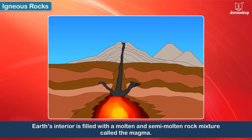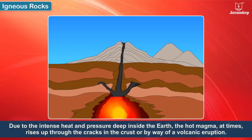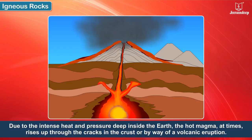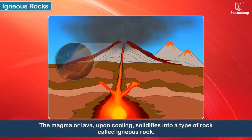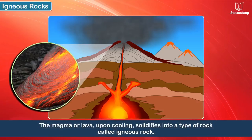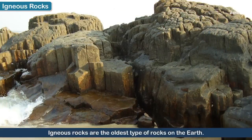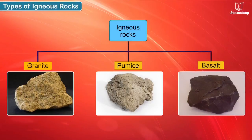The interior of the Earth is very hot. It is filled with a molten and semi-molten rock mixture called magma. Due to the intense heat and pressure deep inside the Earth, the hot magma at times rises up through cracks in the crust or by way of a volcanic eruption. The magma that flows out of a volcanic eruption is called lava. This magma or lava, upon cooling, solidifies into a type of rock called igneous rock. The Latin word 'igneous' means fiery. Igneous rocks are the oldest type of rocks on Earth.